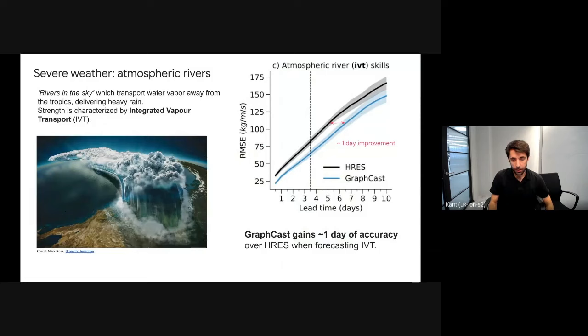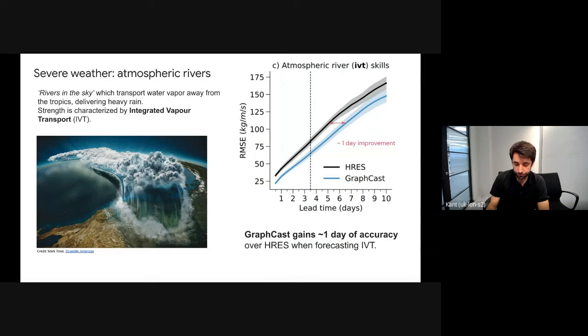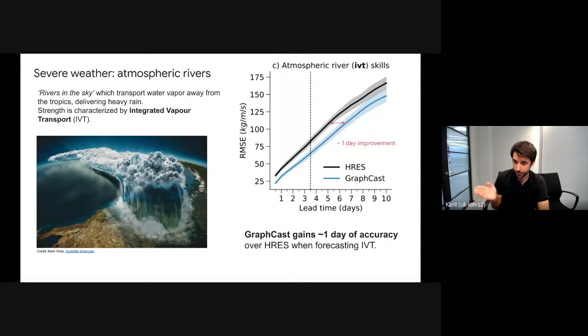We also studied atmospheric rivers — weather phenomena that transport large amounts of water vapor away from the tropics and can cause heavy rains, characterized by the integrated vapor transport (IVT). Evaluated over the U.S. west coast during cold season, GraphCast is one day more accurate in IVT than HRES. Notably, IVT is a nonlinear transformation of the weather variables we predict, not something we directly predict.